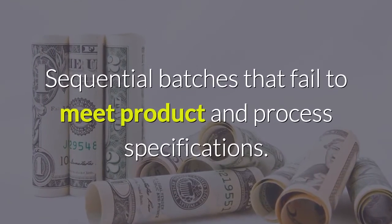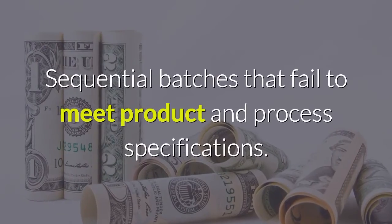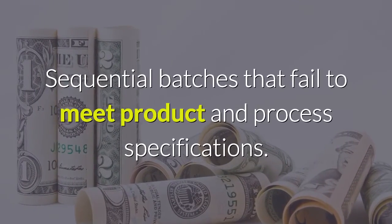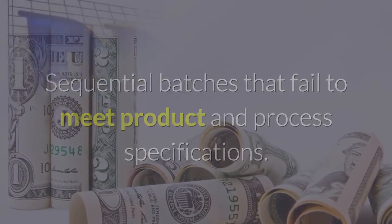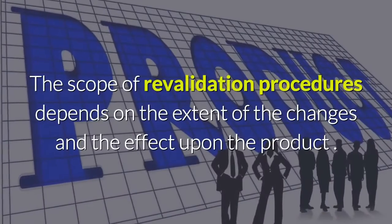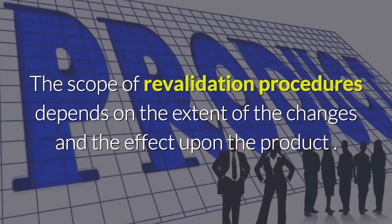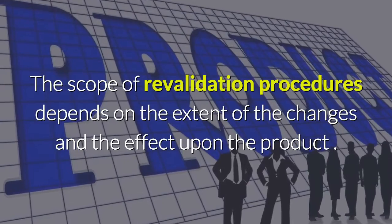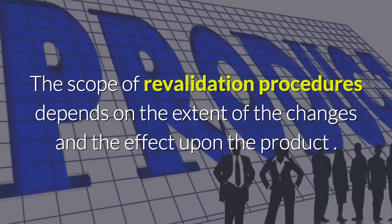Sequential batches that fail to meet product and process specifications also trigger revalidation. The scope of revalidation procedures depends on the extent of the changes and their effect upon the product.